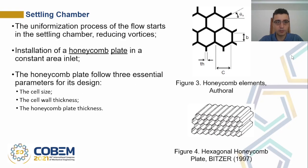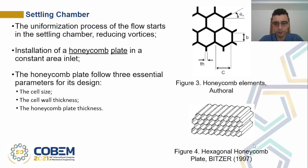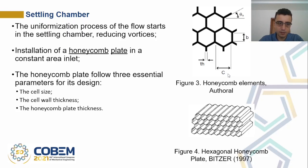Let's start talking about the settling chamber. The uniformization process of the flow starts here, reducing vortices. Installation of the honeycomb plate in the constant area inlet is the way that the settling chamber works. The honeycomb plate follows three essential parameters for its design: the cell size C, the cell wall thickness pH, and the honeycomb plate thickness.